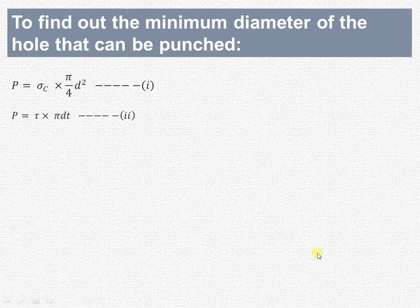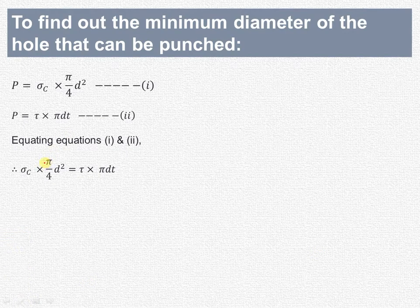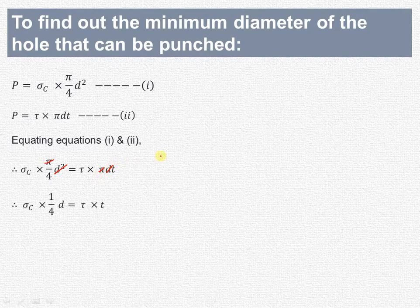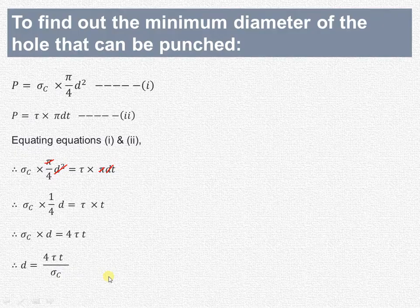Since the left-hand side of both equations is the same (P), we can equate the right-hand sides. Equating RHS: σ_c × π/4 d² = τ × π d t. Cancelling π and one d term: σ_c × (1/4) d = τ t. Cross-multiplying by 4: σ_c × d = 4 τ t. Therefore, the minimum diameter d = 4 τ t / σ_c. This is the minimum diameter of the hole that can be punched during this particular operation.